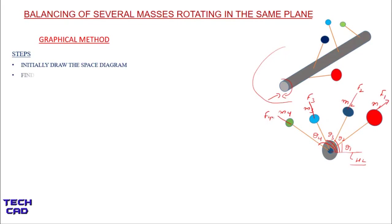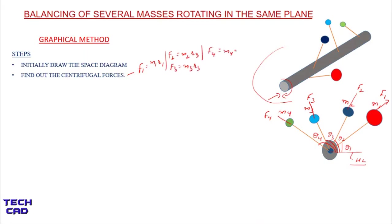In the next step you have to find out the centrifugal forces. The centrifugal forces are F1 = m1·r1, F2 = m2·r2, F3 = m3·r3, and F4 = m4·r4. I neglect the angular velocity omega squared because it is common to all the masses — the angular velocity of m1 is the same as that of m4.